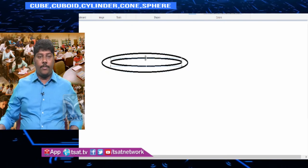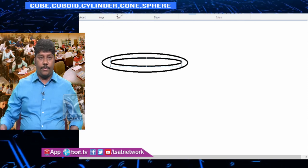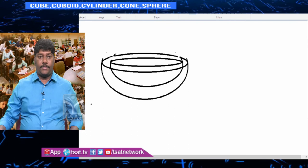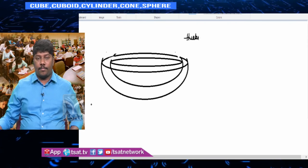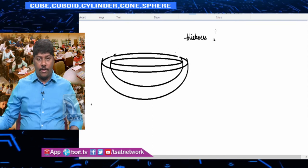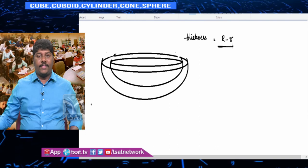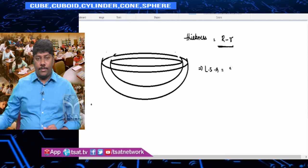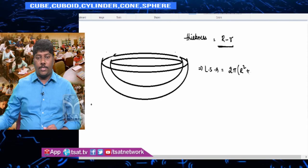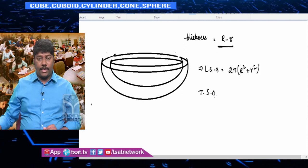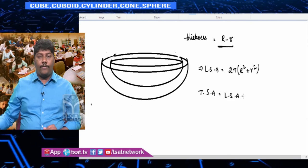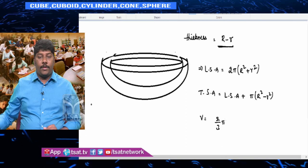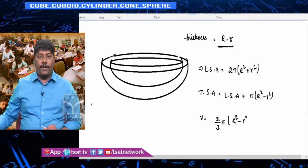A hollow hemisphere is like a ball with certain thickness, with inner radius r and outer radius R. The thickness = R − r. Lateral surface area = 2πR² + 2πr² (both curved surfaces added). Total surface area = lateral surface area + one ring area = 2π(R² + r²) + π(R² − r²). Volume = (2/3)π(R³ − r³).